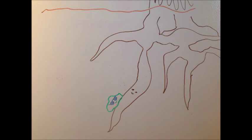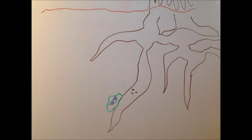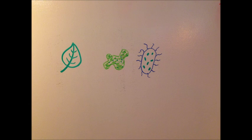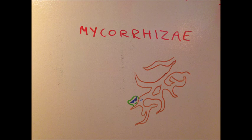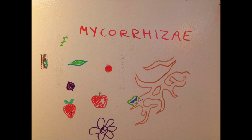Fungi tend to have mutualistic relationships with plants, algae, cyanobacteria, and animals. An example is mycorrhizae, a common symbiotic relationship between fungi and plant roots. It's observed in a wide variety of plants, including ferns, mosses, and in crops like peas, tomatoes, onions, apples, and strawberries, as well as wild plant communities.